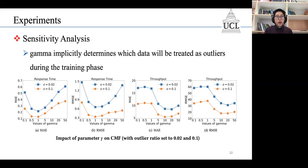We can see that our approach is sensitive to parameter gamma. This is because gamma implicitly determines which data will be treated as outliers during the training phase. So to achieve the best performance, we need to choose a proper gamma.